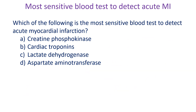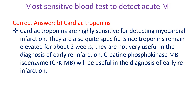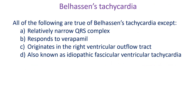Which of the following is the most sensitive blood test to detect acute myocardial infarction? A. Creatinine phosphokinase. B. Cardiac troponins. C. Lactate dehydrogenase. D. Aspartate aminotransferase. Correct answer: B. Cardiac troponins. Cardiac troponins are highly sensitive for detecting myocardial infarction and are also quite specific. Since troponins remain elevated for about 2 weeks, they are not very useful in the diagnosis of early re-infarction. Creatinine phosphokinase MB isoenzyme will be useful in the diagnosis of early re-infarction.